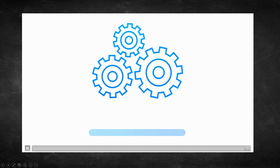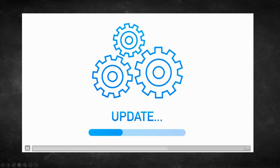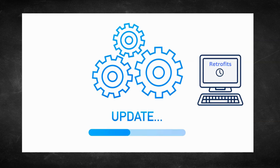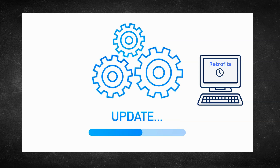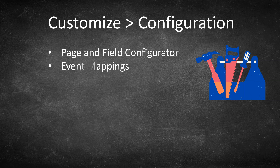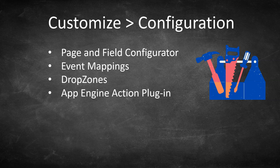Whenever a PeopleSoft customer wants to upgrade their system, the main hurdle or time-consuming step is taking care of customizations, mainly customizations that touched delivered objects. Hence, Oracle is providing us tools to isolate or eliminate customizations so customers can upgrade their system faster. The main tools Oracle provided so far are Page Field Configurator, Event Mapping, Drop Zones, and the tool we are about to discuss — App Engine Action Plugin.